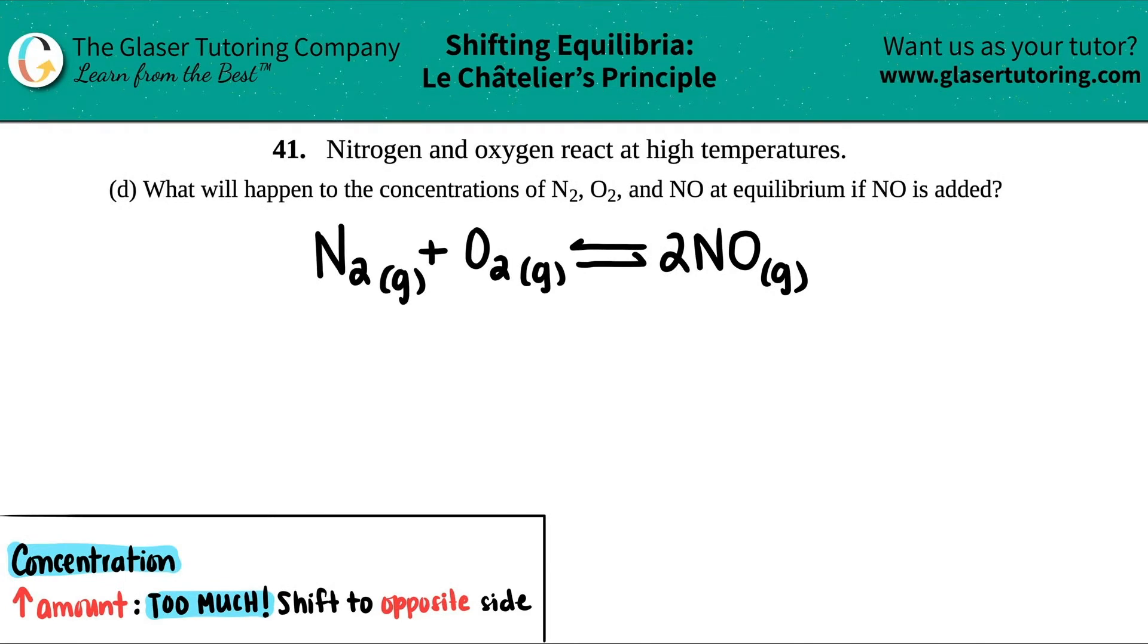Number 41. Nitrogen and oxygen react at high temperatures. And then we have letter D. What will happen to the concentrations of N2, O2, and NO at equilibrium if NO is added?